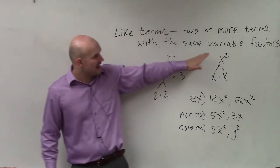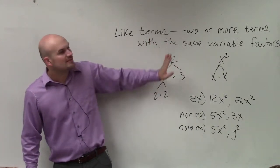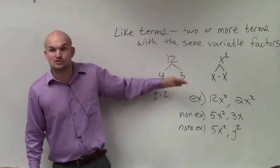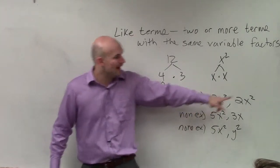Just remember, variable factors have to have not only the number—well, actually, the number is irrelevant. It's all about the variable factors. So if you have two numbers, that's obviously you're good. If you have an x squared, you have to have another x squared.